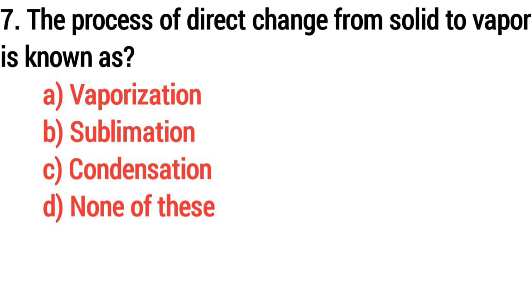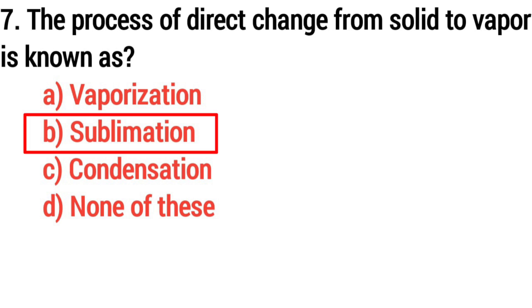Q7. The process of transition from solid to vapor is known as? Answer, option B: Sublimation.